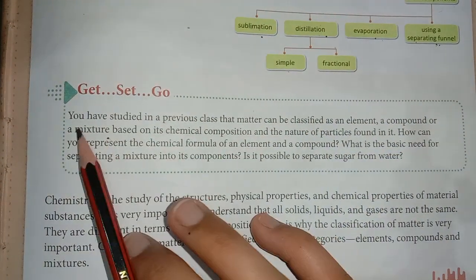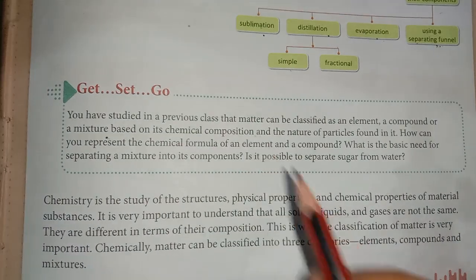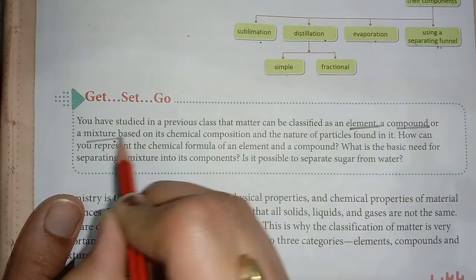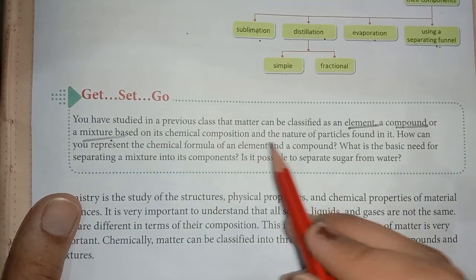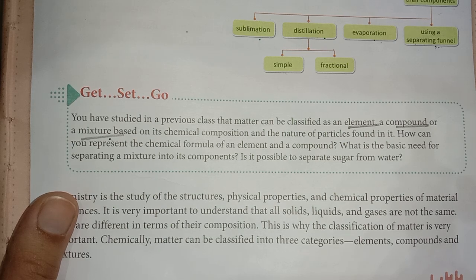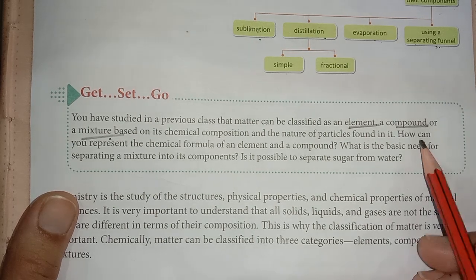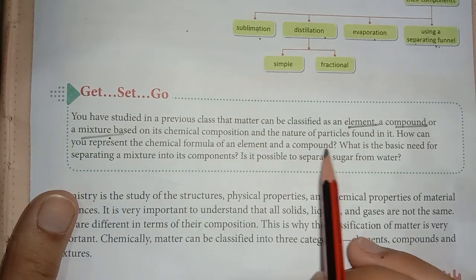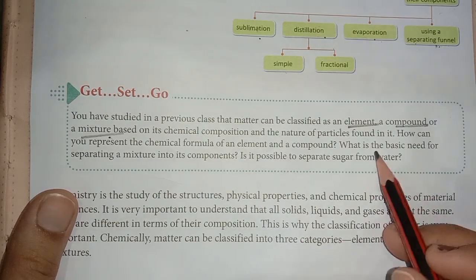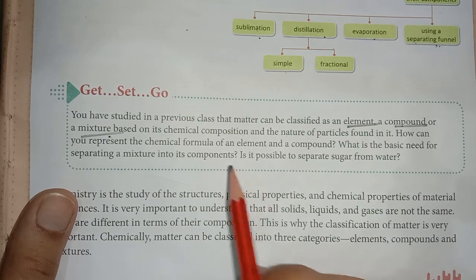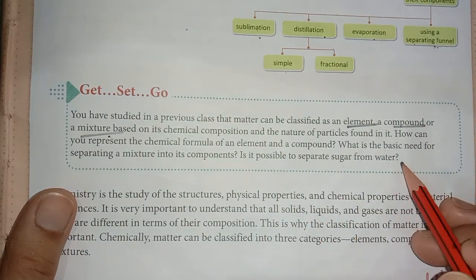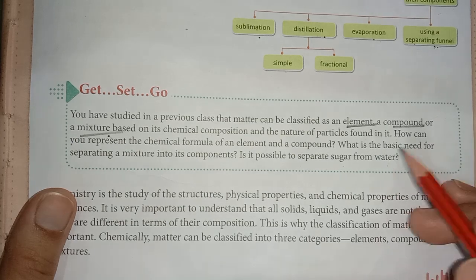In your previous class you studied that matter can be classified as element, compound, and mixture based on its chemical composition and the nature of particles found in it. How can you represent the chemical formula of an element and a compound? What is the basic need for separating a mixture into its components? For example, is it possible to separate sugar from water?